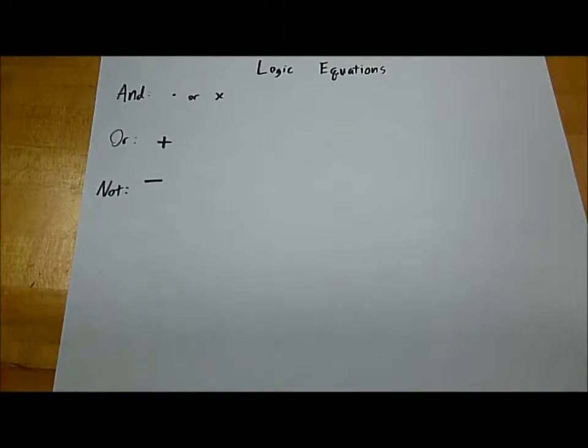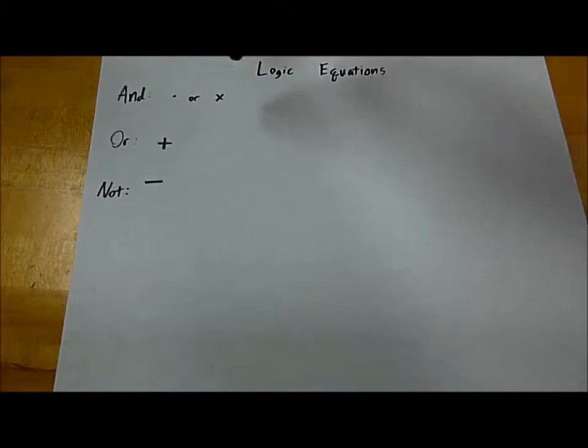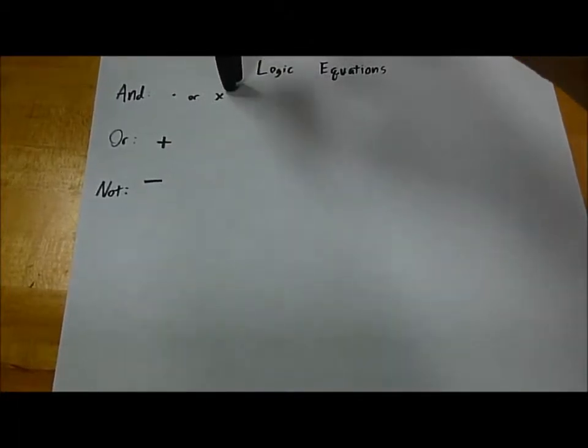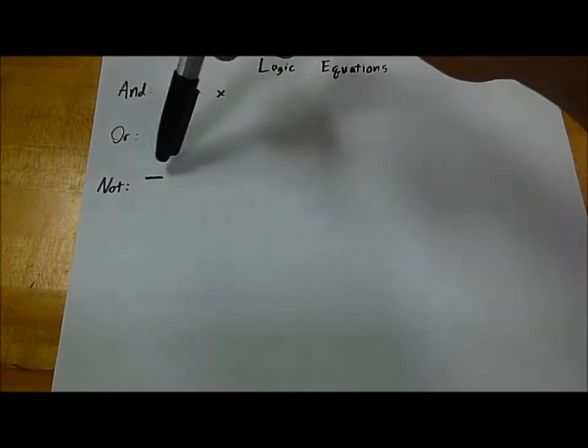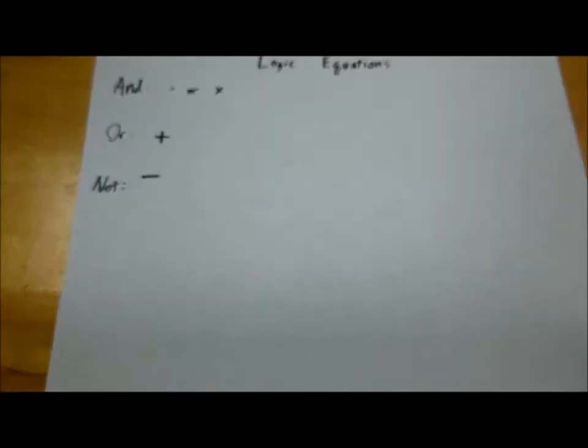These are logic equations. We represent a logic equation using the values of the inputs, usually A, B, C, or D, and our operators. Our basic operators are either the dot or an X for AND, a plus for OR, and a bar over top of the input for NOT.